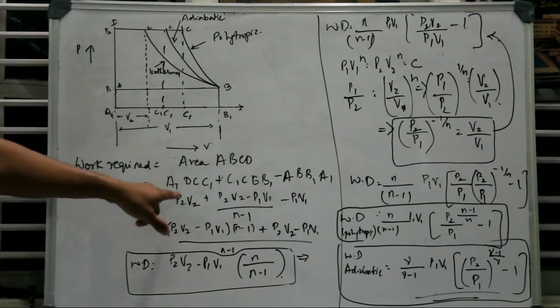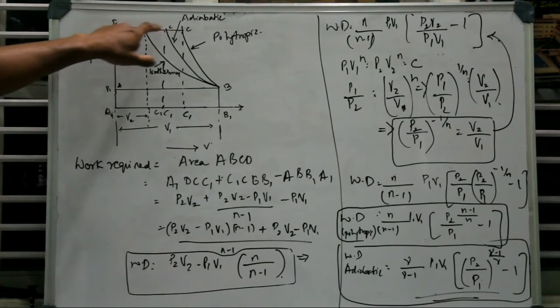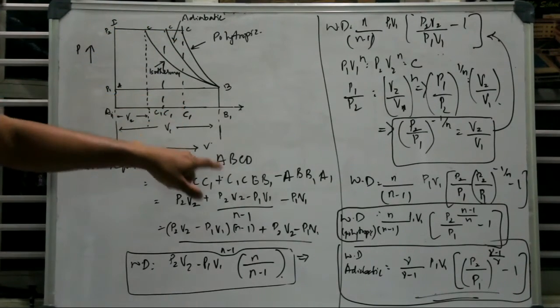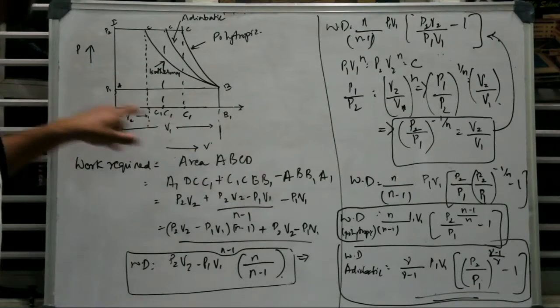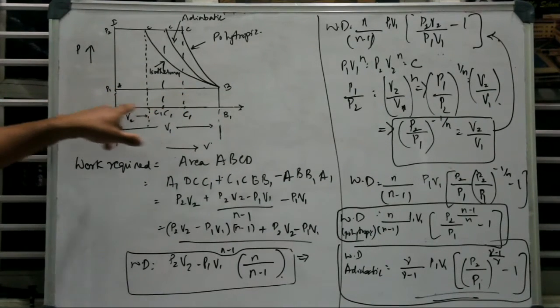So the first one is going to be A1, D, C, C1 plus C1, C, B, B1 minus A, B, B1, A1.